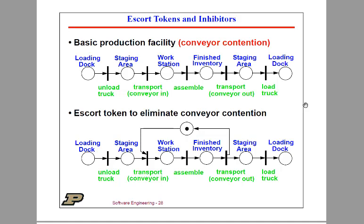Imagine that we're now representing a Petri Net to represent a manufacturing line — a basic production facility. We've got a loading dock, and when parts come into the loading dock, they go into a staging area, then out to a workstation where they're assembled. Once assembled, they're ready for inventory. The final inventory goes out to a staging area, and you can go back out to the loading dock. Think of a kit of parts coming in and becoming a finished product.